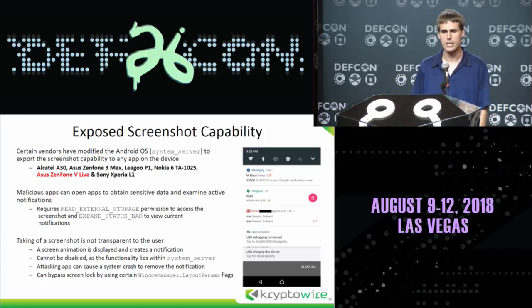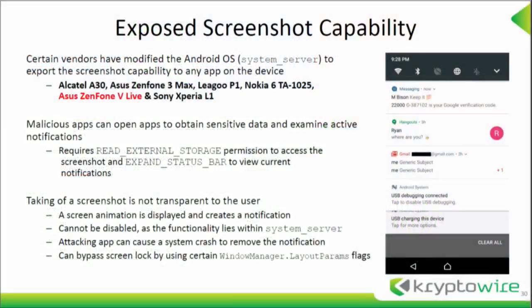We also found that certain devices have the capability where a third-party app can initiate the taking of a screenshot. This is generally from a modified system server — there will be a broadcast receiver where if you send it a specific intent message it will take a screenshot. If an application has read external storage, it can read from the SD card. You can also expand the status bar to see the user's current notifications.